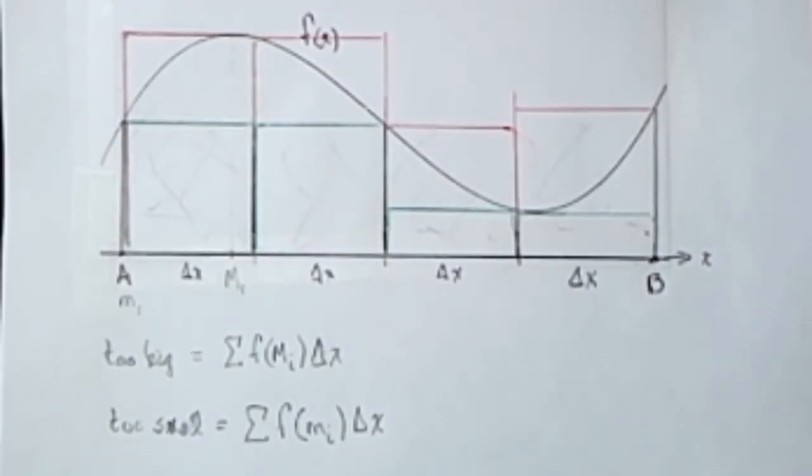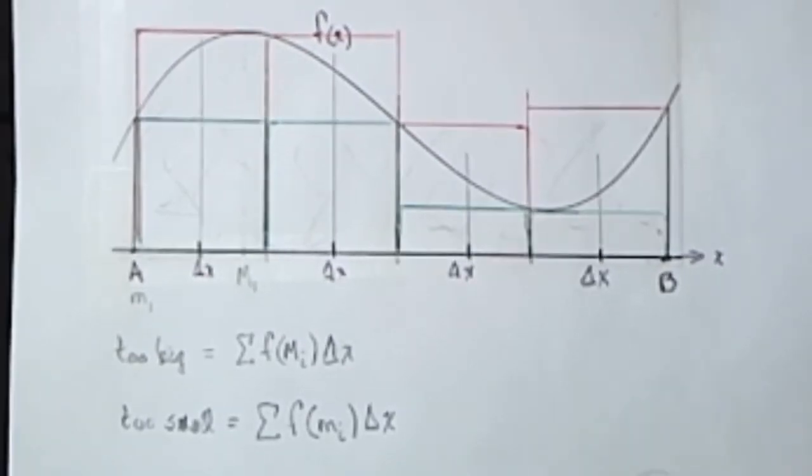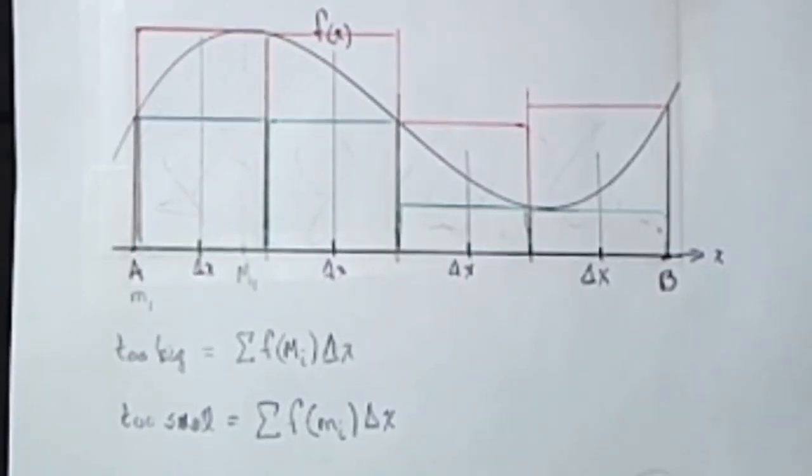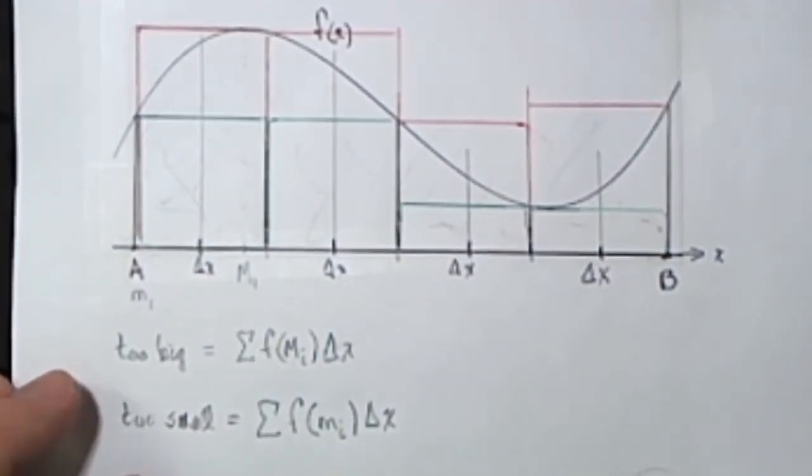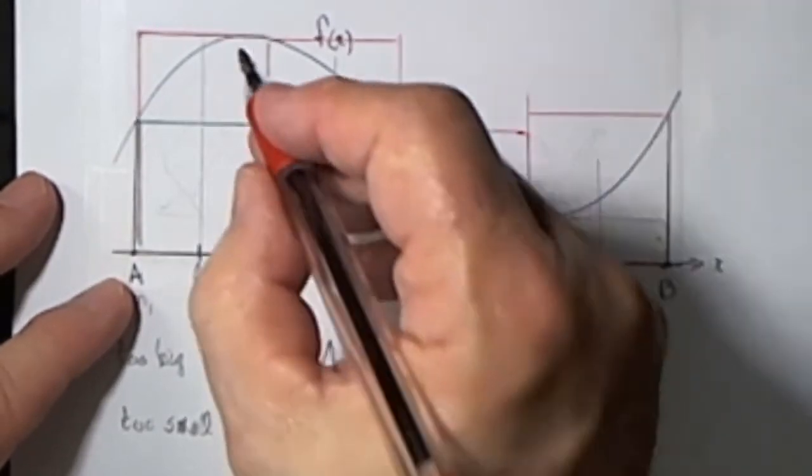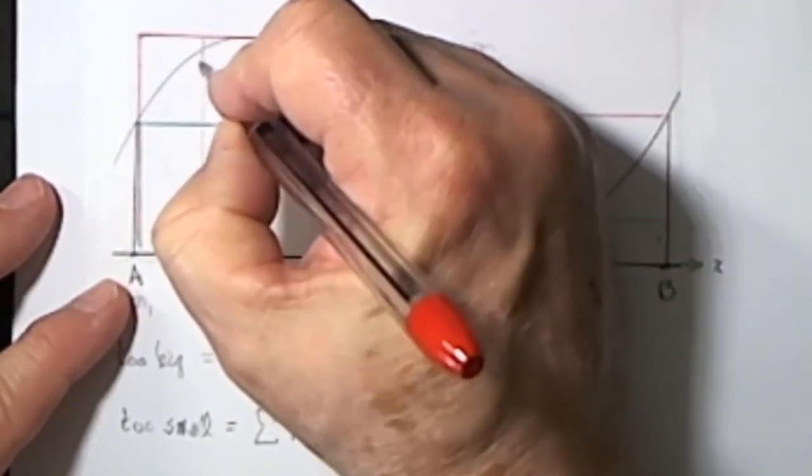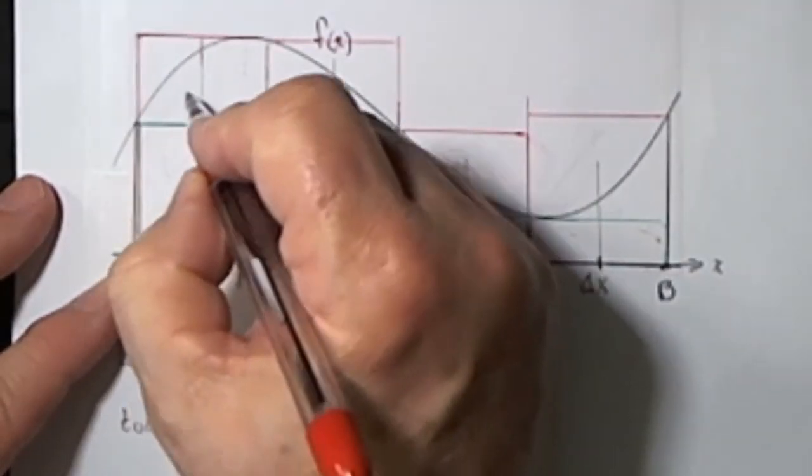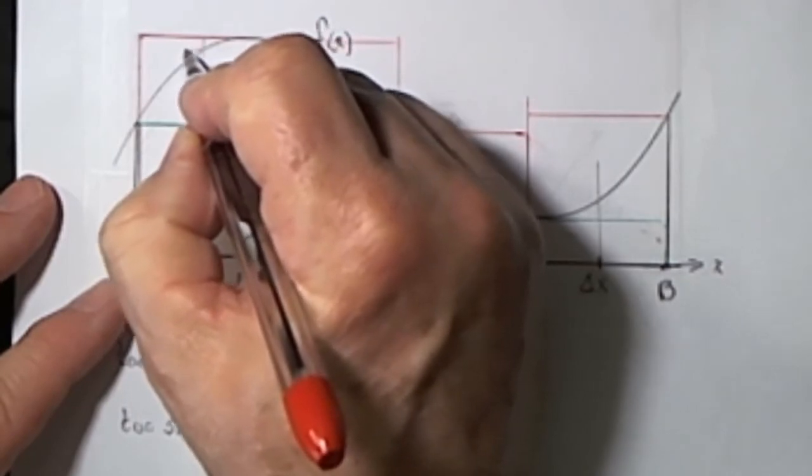Now look at what happens if we subdivide each of these previous sub-intervals. I subdivided each one of them in half, and so now we have eight sub-intervals instead of four. Now notice what happens. If I start to build rectangles, the rectangle here, the largest rectangle.